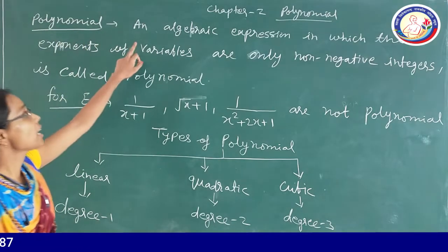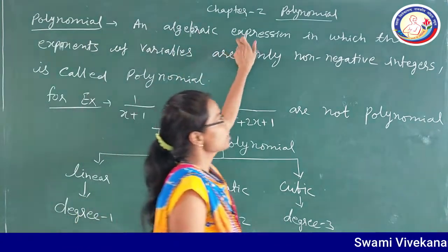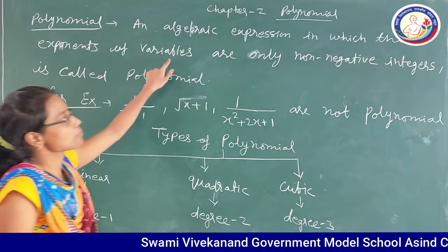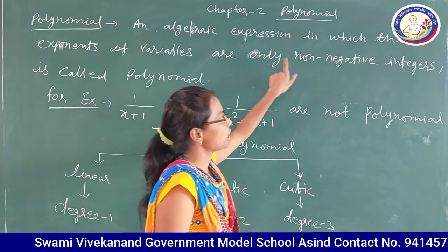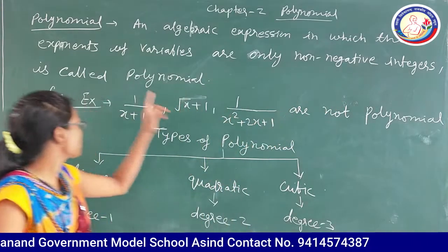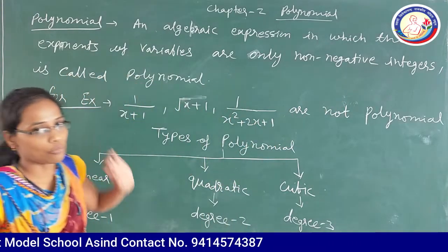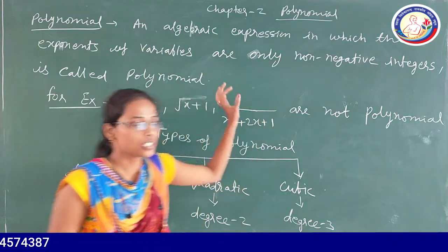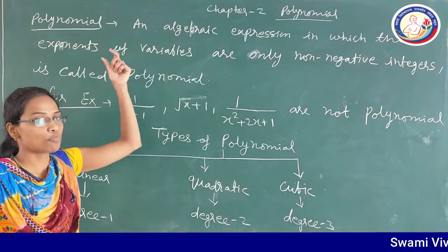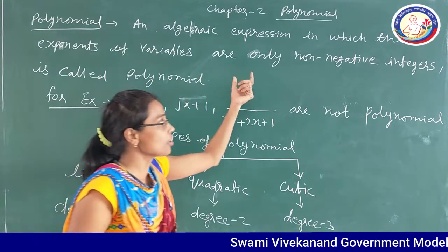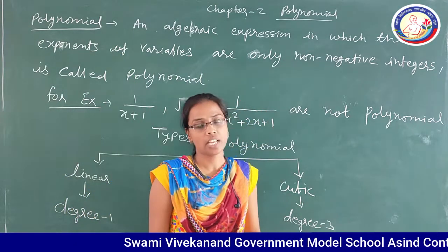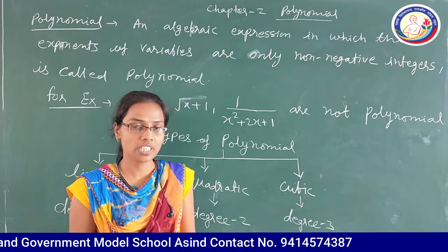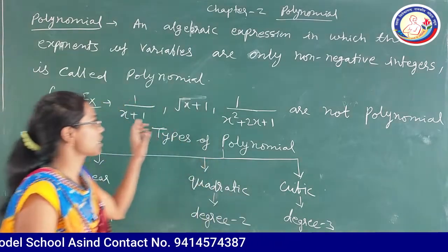Polynomial means an algebraic expression in which the exponents of variables are only non-negative integers. That means the power of variables — which we call exponent — should be only non-negative integers; they should not be negative, not in fraction form, and must be whole numbers.